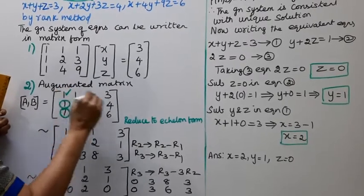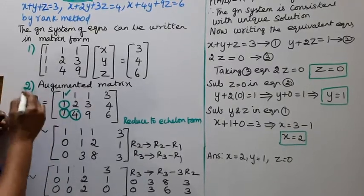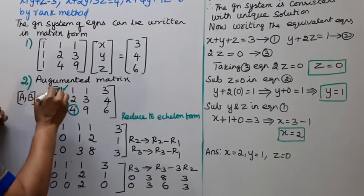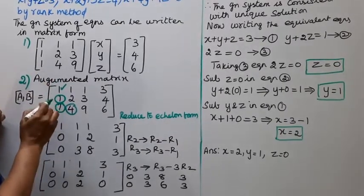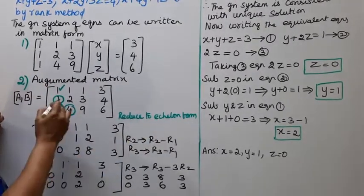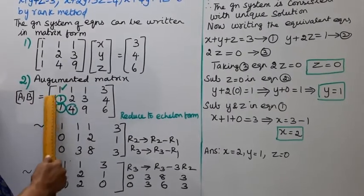First, reduce to echelon form. R2 tends to R2 minus R1. R3 tends to R3 minus R1.